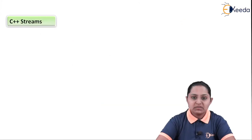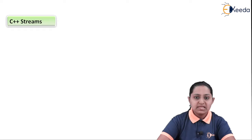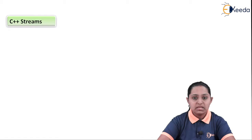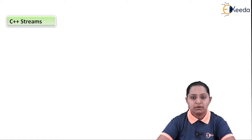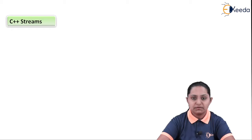C++ streaming means a data flow. When we see a data flow, that means you are storing the data from an input device to the output device, and with the help of that, we can use it with different classes. We will see in detail.